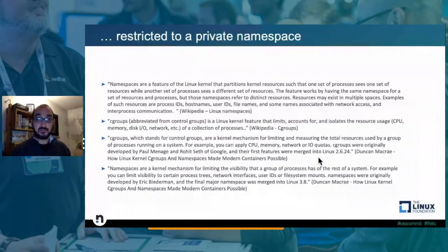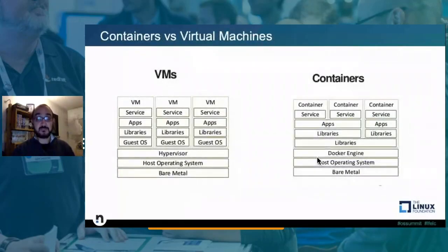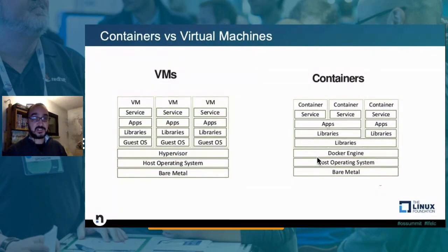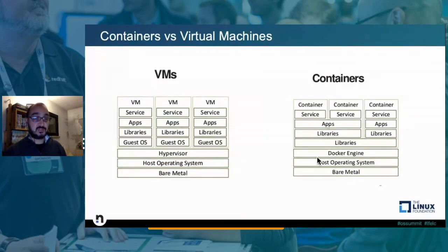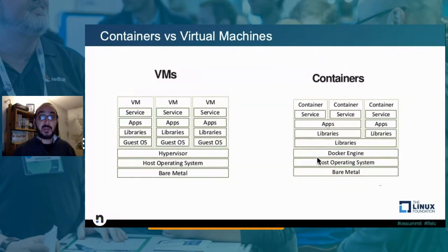Namespaces and cgroups are features available in the Linux kernel that allow isolating a group of processes so they see only a subset of the machine's resources. This is what makes a clear distinction between virtual machines and containers. Virtual machines are based on hypervisors that perform hardware virtualization. You have a physical server with a hypervisor installed. This hypervisor lets virtual machines see virtualized hardware inside the physical one, segregating and distributing physical resources — each virtual machine running with its own operating system, libraries, applications, and services.